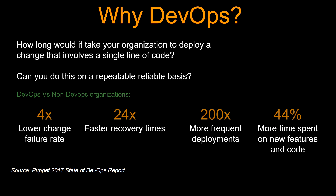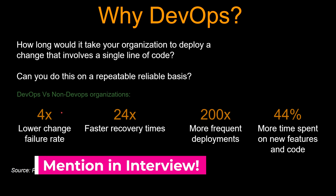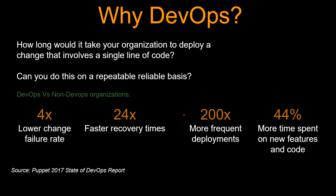All that sounds fancy, but let's take a closer look at why we need DevOps and see if data supports it. Think about these two questions: how long would it take your organization to deploy a change that involves a single line of code — is it seconds, minutes, hours, or days? And can you do this on a repeatable, reliable basis? According to the Puppet 2017 State of DevOps report, organizations which adopt DevOps have four times lower change failure rate, 24 times faster recovery times, 200 times more frequent deployments, and 44% more time spent on new features and code compared to their non-DevOps counterparts.